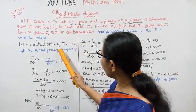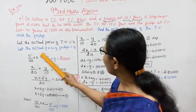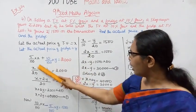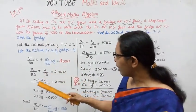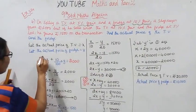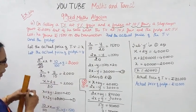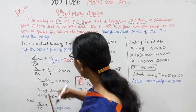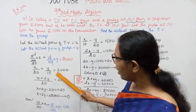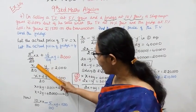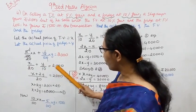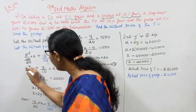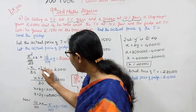TV at 5% gain: 5 by 100 into X. Fridge at 10% gain: 10 by 100 into Y. Total gain equals Rs. 2000. Simplifying: X by 20 plus Y by 10 equals 2000.